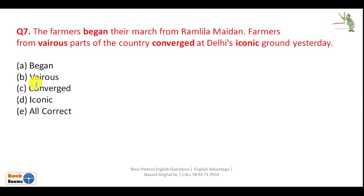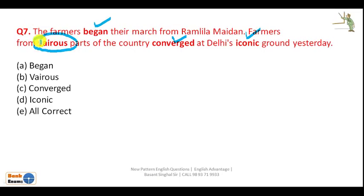Question 7: 'The farmers began' — 'began' is correct. 'Iconic' is correct. 'Conversed' is correct. But the spelling of 'various' is wrong — the correct spelling is V-A-R-I-O-U-S. So the answer is 'various.'